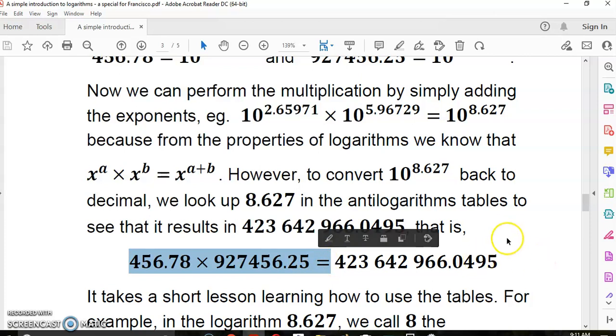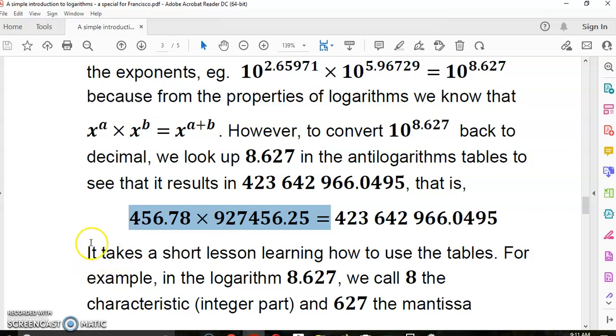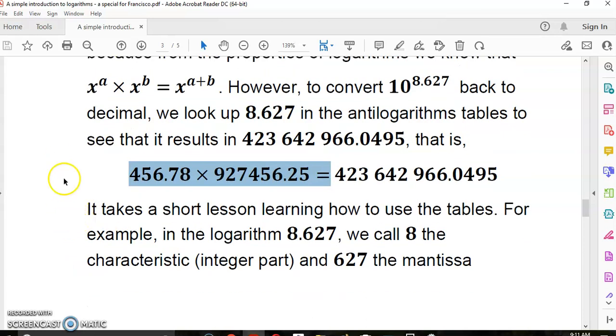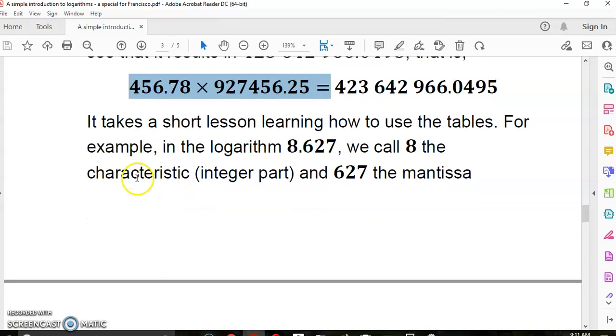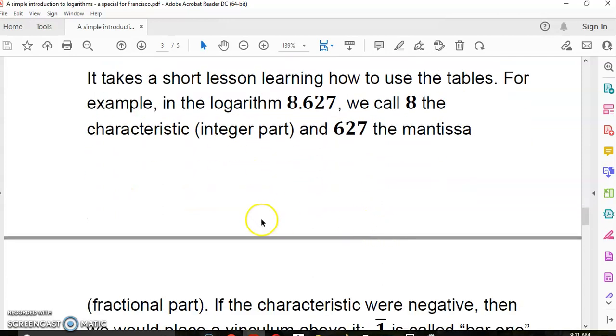We know from the property of logarithms that x to the a times x to the b is the same as x to the a plus b. So to convert this back to a decimal, we look this up in the anti-logarithm tables to see that it results in this big number. So that is, multiplication has been done. We would do division in exactly the same way. For example, if we were working with moles and Avogadro's number in physics and science, we would use logarithm tables.